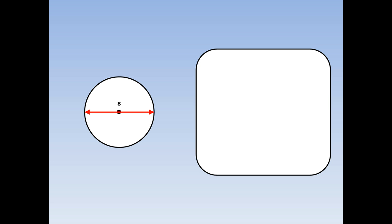Find the circumference of this circle with diameter 8. First of all, I write out the formula: circumference equals 2 pi r. This means 2 times pi times the radius. Pi is equal to 3.14. The radius is half the diameter — half of 8 is 4. The circumference of this circle ends up being 25.12 centimetres. Notice it's centimetres because it's a distance.